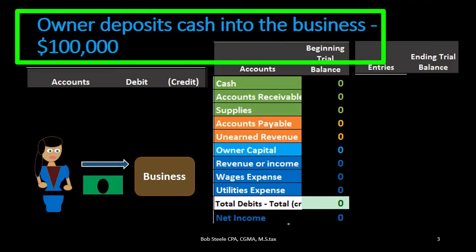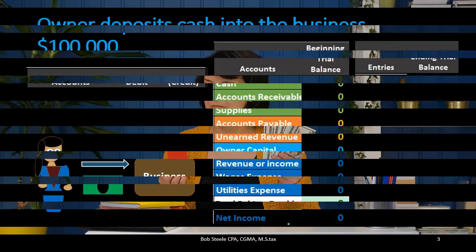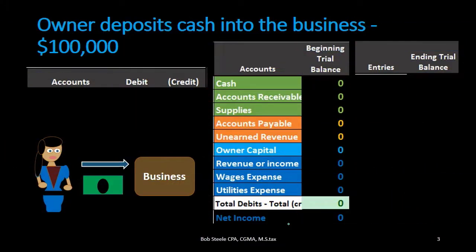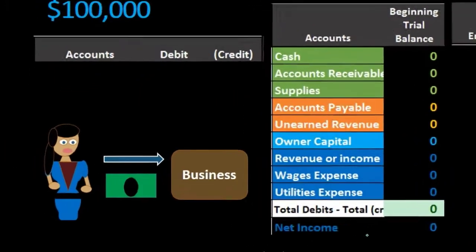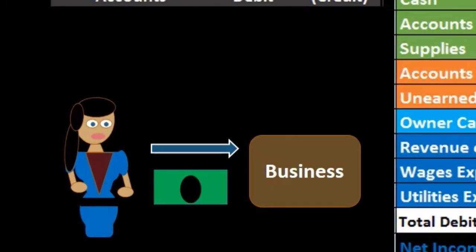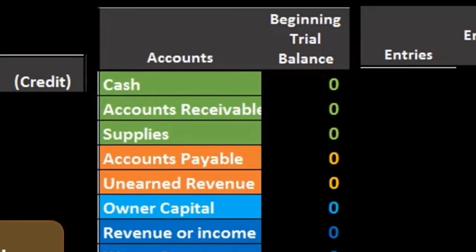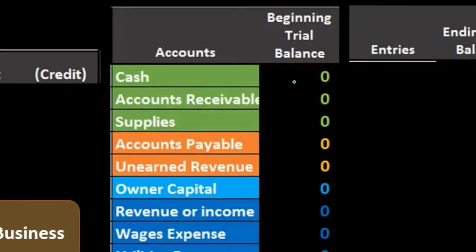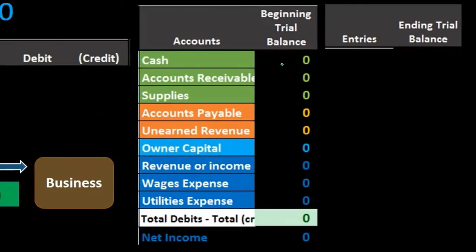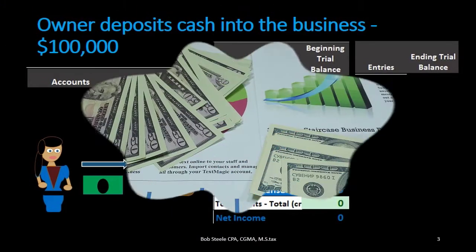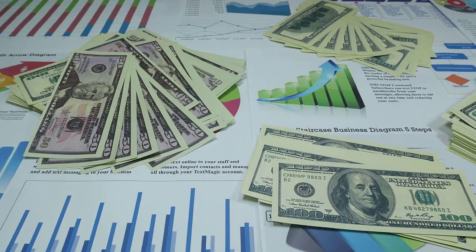The first transaction says: owner deposits cash into a business. This is typically going to be one of the first transactions that happens within a business. Our first question is: is cash affected? We're going to say yes — the owner deposits cash into the business, so cash is going up because there is a deposit.